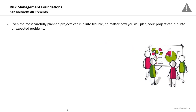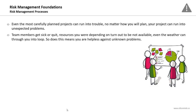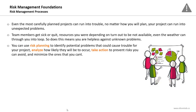Even the most carefully planned projects can run into trouble. Team members get sick or quit, resources you were depending on turn out to be unavailable, and even the weather can throw you into a loop. So does this mean you are helpless against unknown problems? The aim of conducting risk management activities is to reduce the probability and impact of both known and unknown problems.